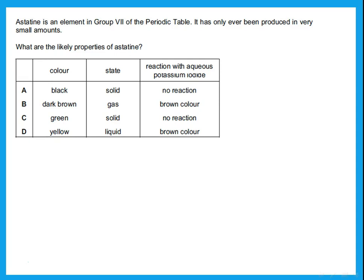Remember, where is astatine in the periodic table? It's at the end, at the bottom of group 7. So what was the color of astatine? The color of astatine should be the darkest of these colors. So that is black. So actually my answer should be A.